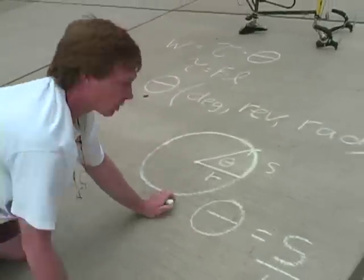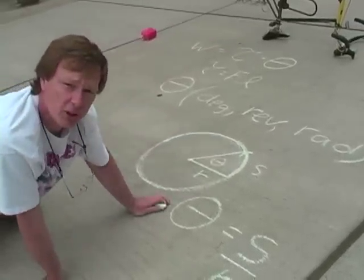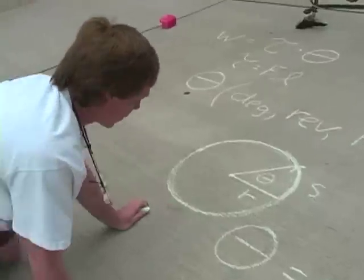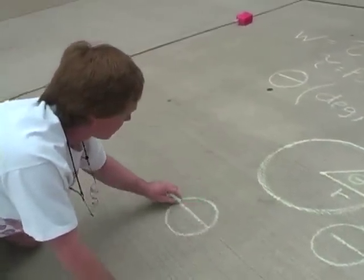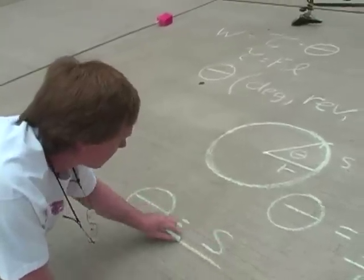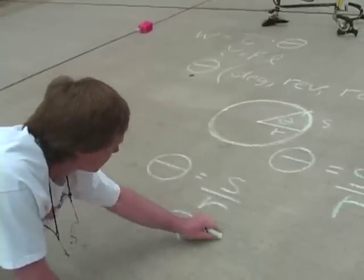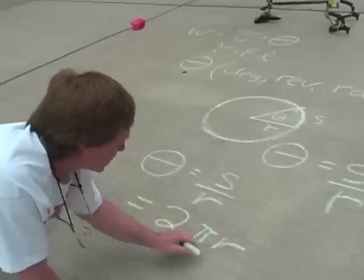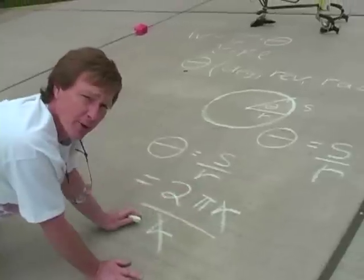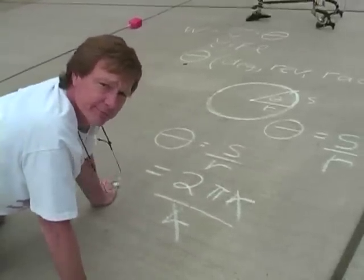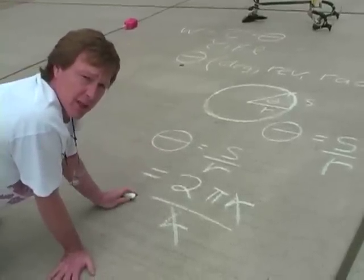Now, if I move once around a circle — all the way around — the circumference of a circle is 2π times the radius. So for one revolution, theta is the distance along the perimeter divided by the radius, which is 2π times the radius divided by the radius. They cancel out. There are 2π radians in one revolution of a circle. So that's how we convert between revolutions and radians. Let's try an example.